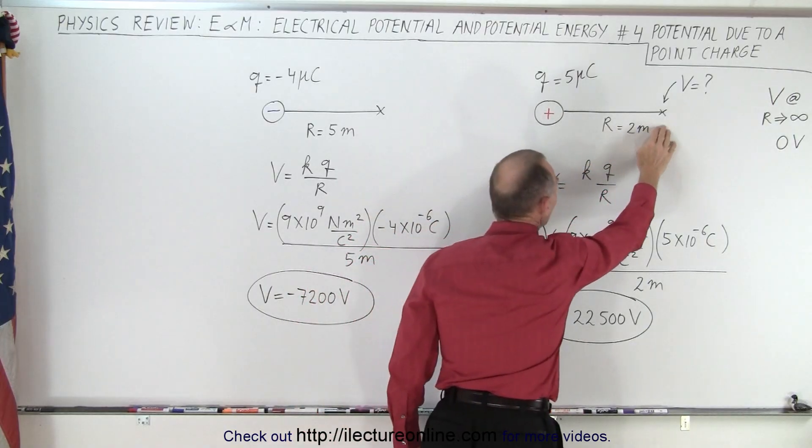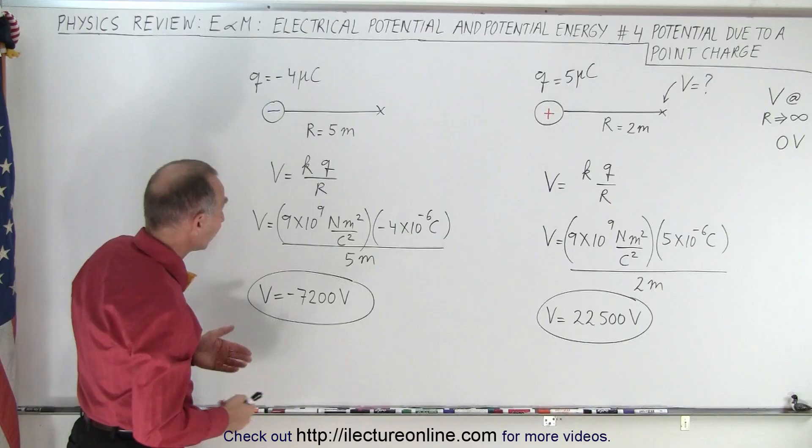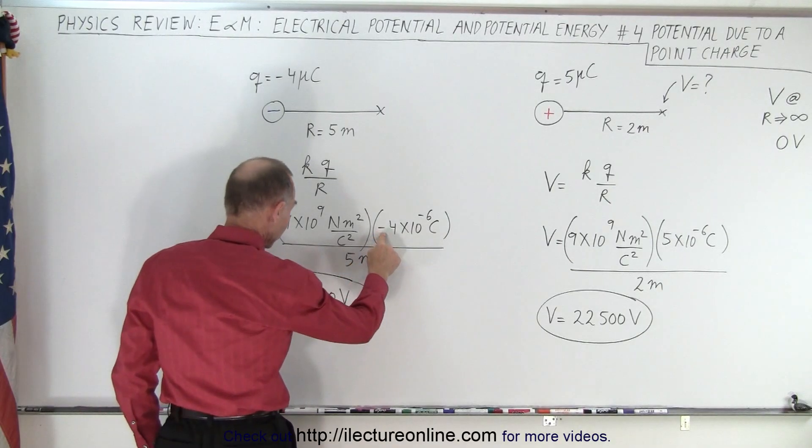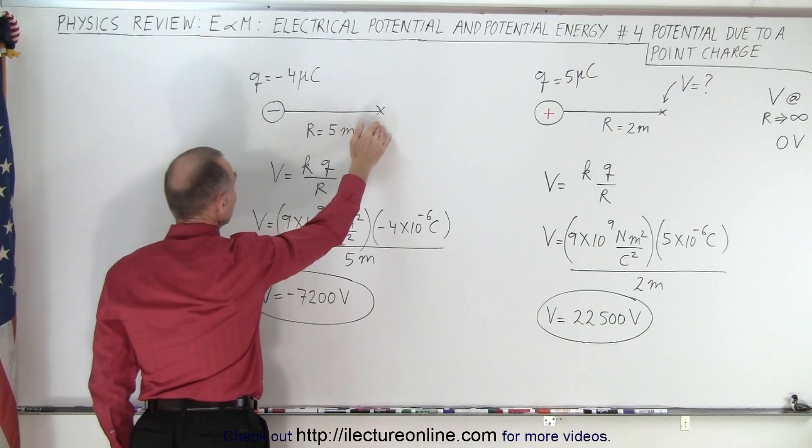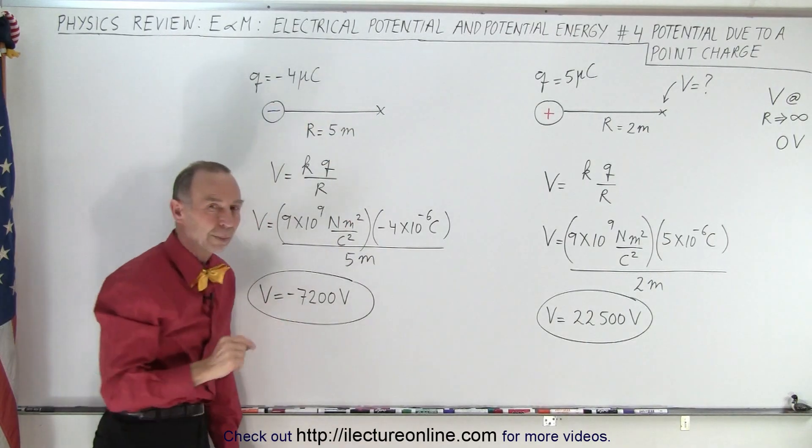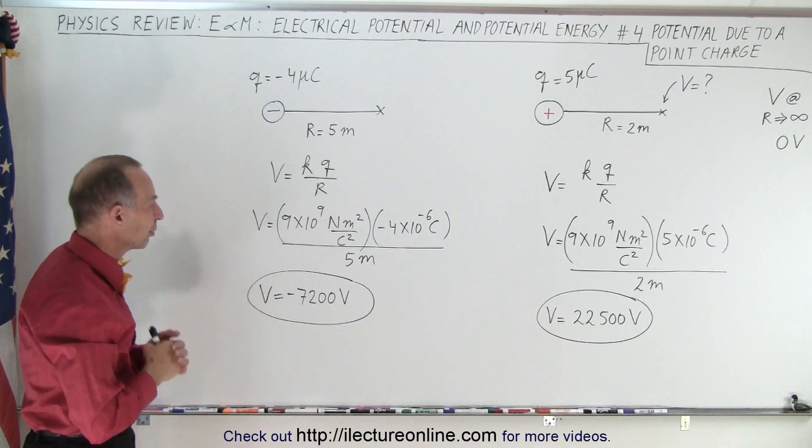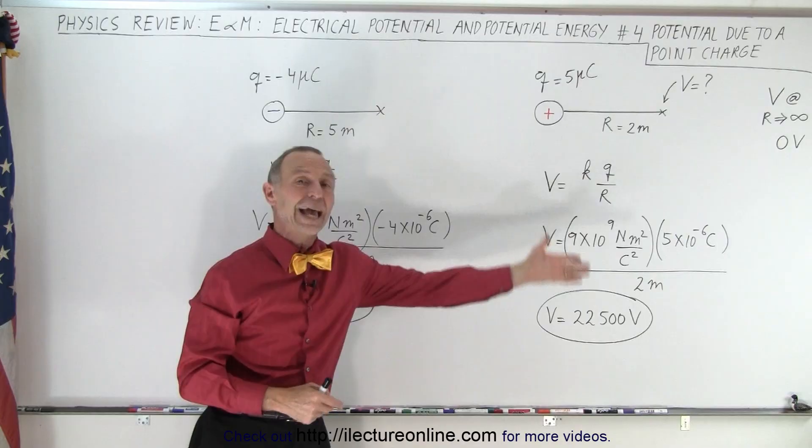If it's negative, then of course, we put a negative charge in there, and the potential will be negative. So in this case, for being 5 meters away from a minus 4 microcoulomb charge, the potential at that location will be a minus 7,200 volts relative to zero, to being zero volts at infinity.